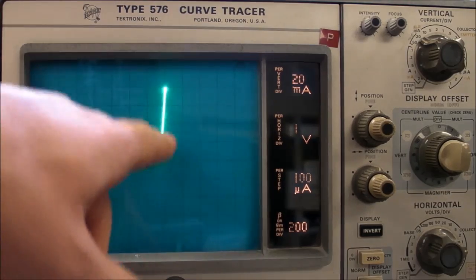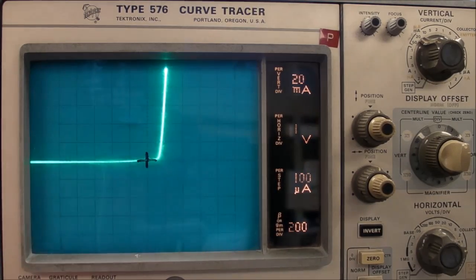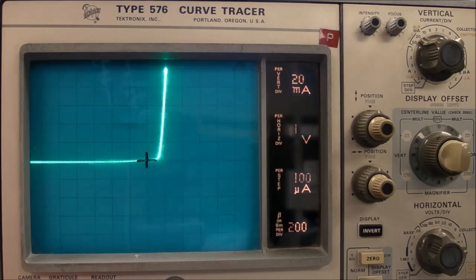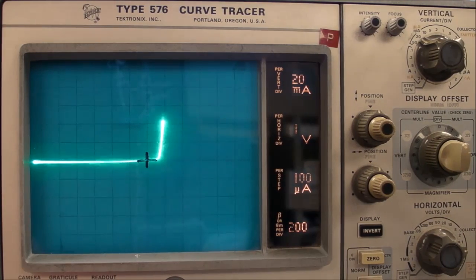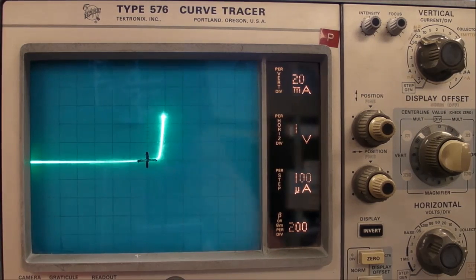We're looking at 20 milliamps per division, so right up there, that's 100 milliamps. And it looks like an ordinary diode. Maybe not a very good one at that, but ordinary diode.